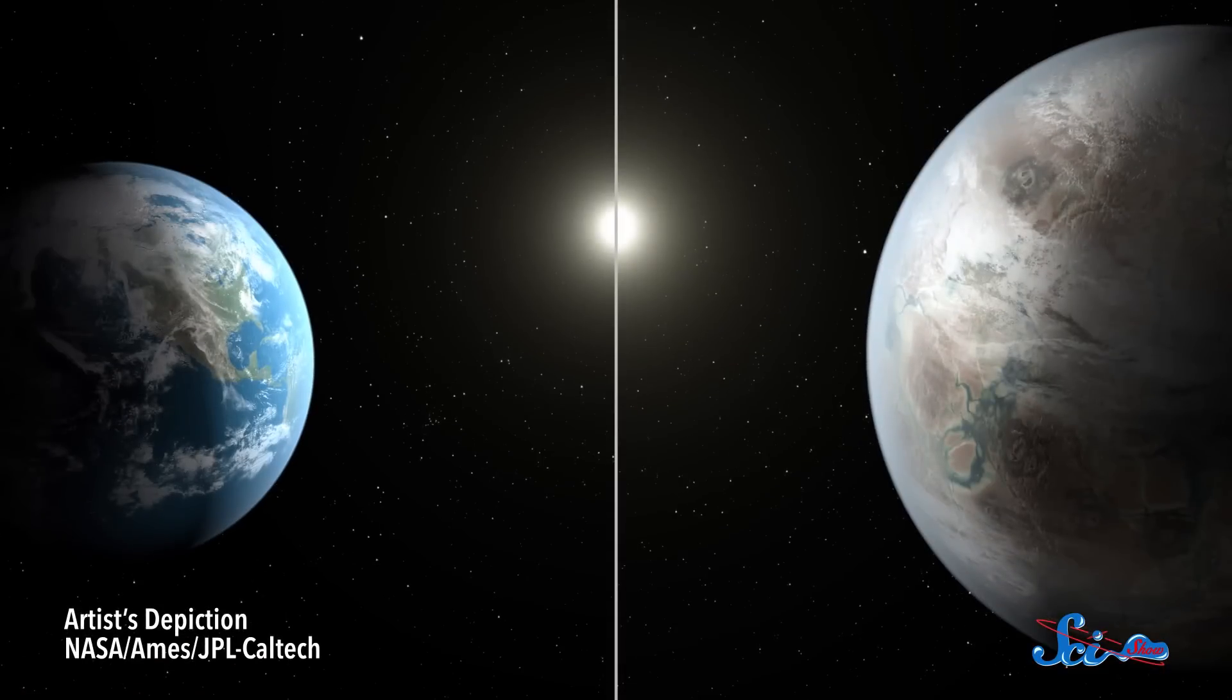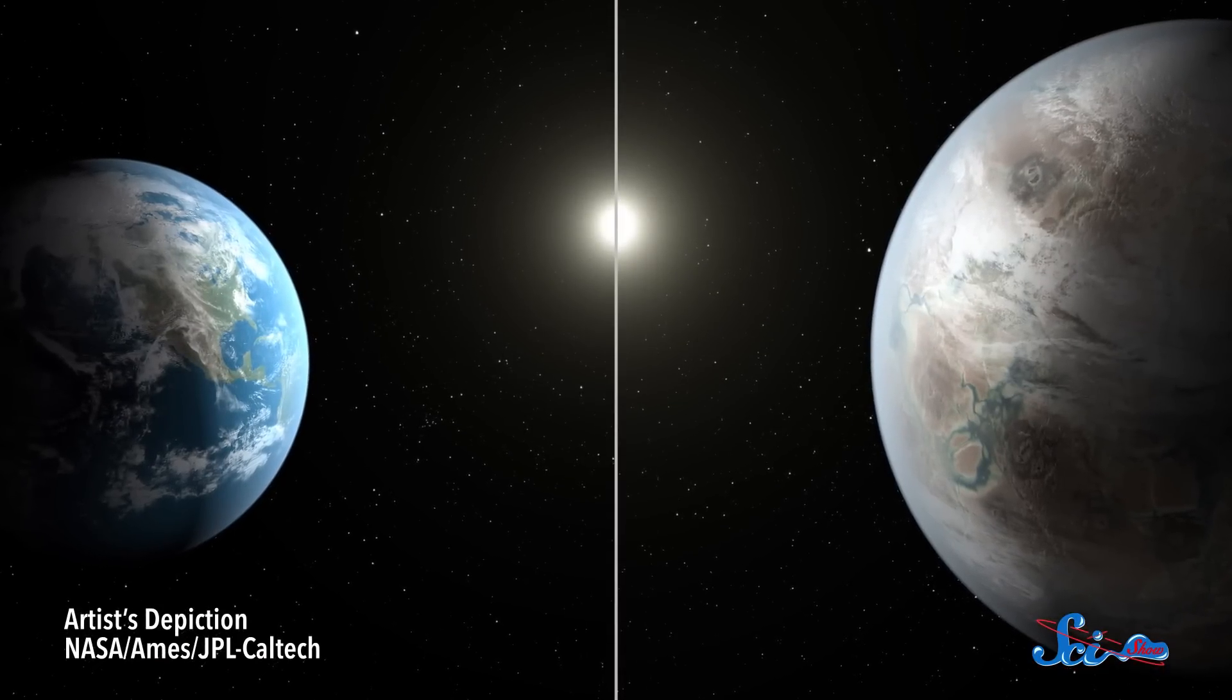But there's still plenty of new Kepler data waiting to be crunched, so this is a record that might soon be broken. For now, at least, Kepler-452b is the closest thing Earth has to a twin.